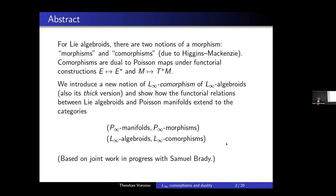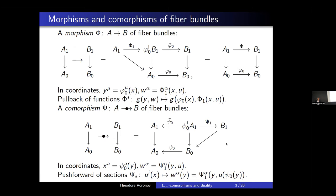We generalize comorphisms to L∞ algebroids. It turned out this is not entirely obvious, because we actually have two slightly different versions of this notion. We were able to generalize the known relations for Lie algebroids and Poisson manifolds to the case of L∞ algebroids and P∞ manifolds. This is joint work with my student Sam Brady, which is in progress and almost done, though there are various details to be worked out.